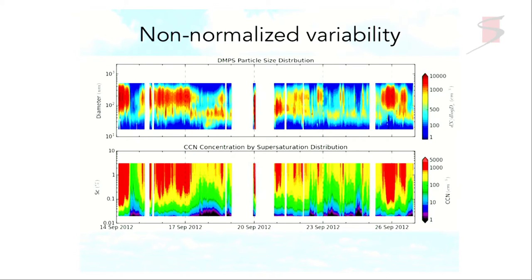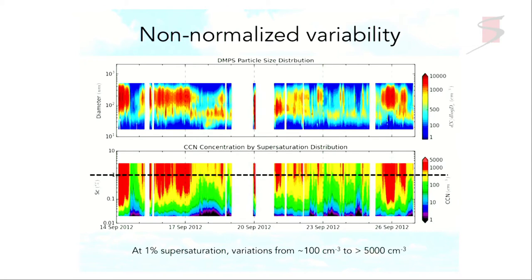The non-normalized variability looks a lot more variable because of the number changes being put on top of that. So just as an example, if we look at a supersaturation of 1% across this timeline, we can see that there's variability from about 100 per cubic centimeter to more than 5,000 per cubic centimeter. That is possible, but they're not always for the same aerosol type.